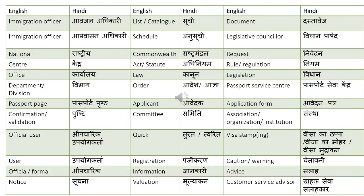National — rastriya. Center — kendra. National center — rastriya kendra. Office — karyalaya. Department — vibhag. Division — vibhag. Passport page — passport prushed. Confirmation or validation — pushti.